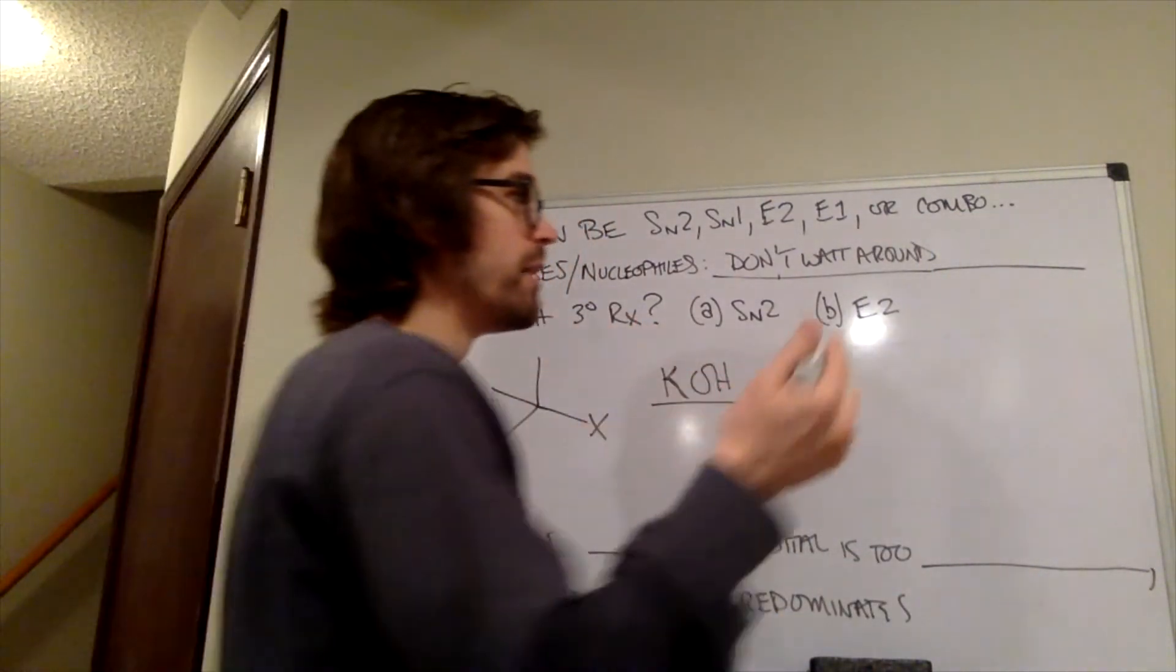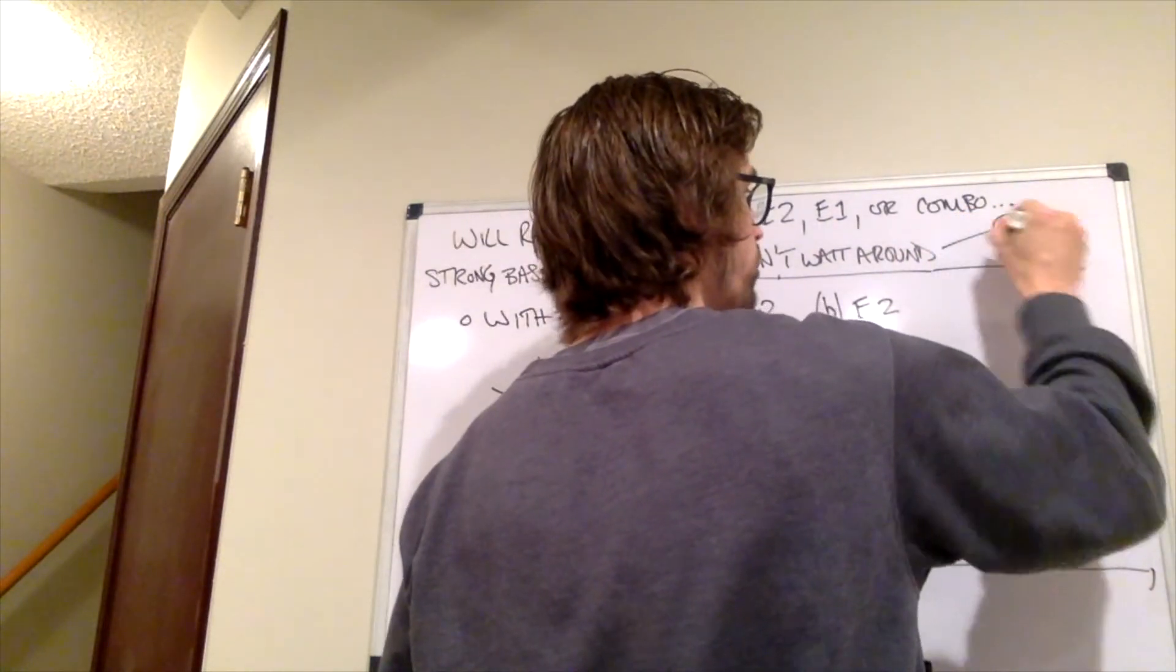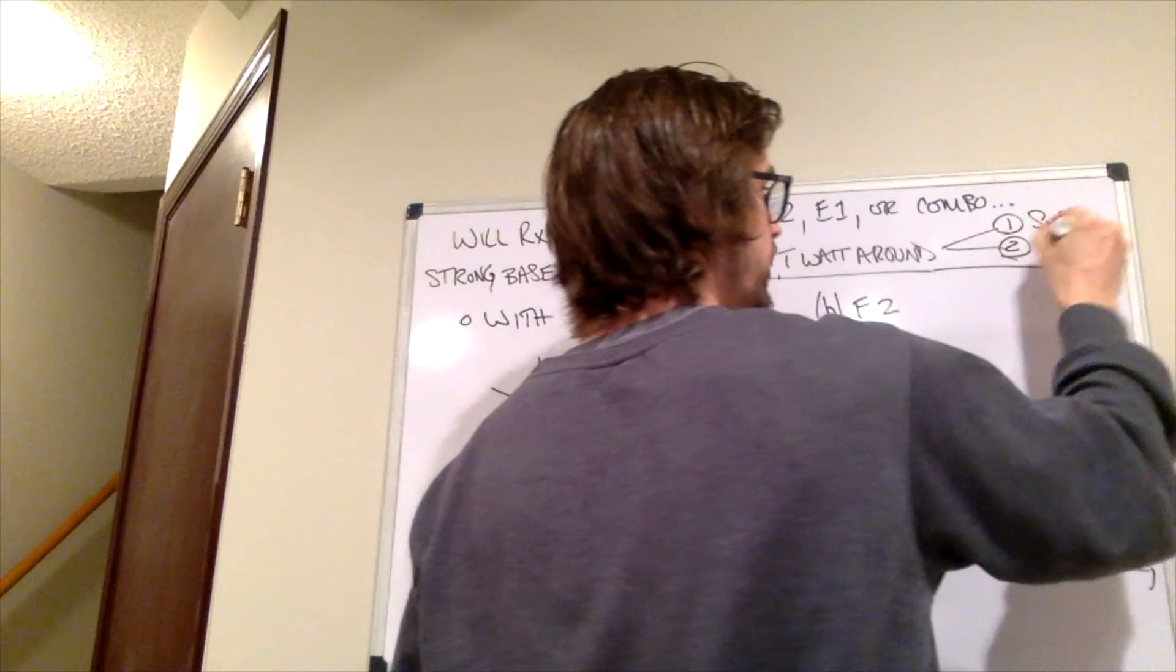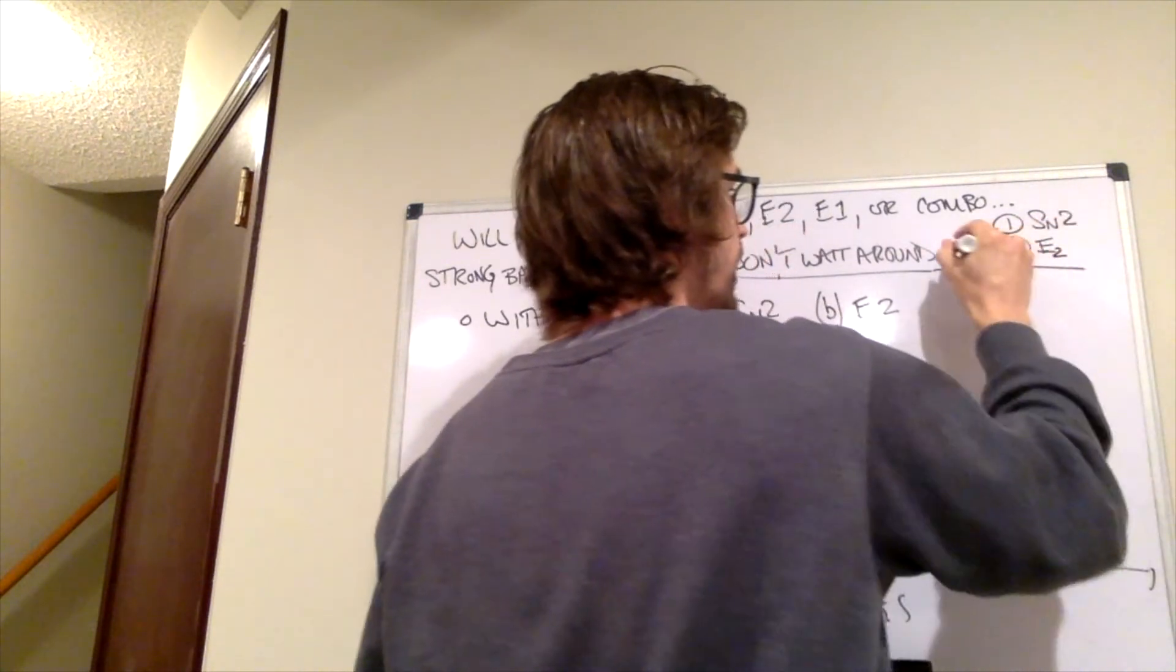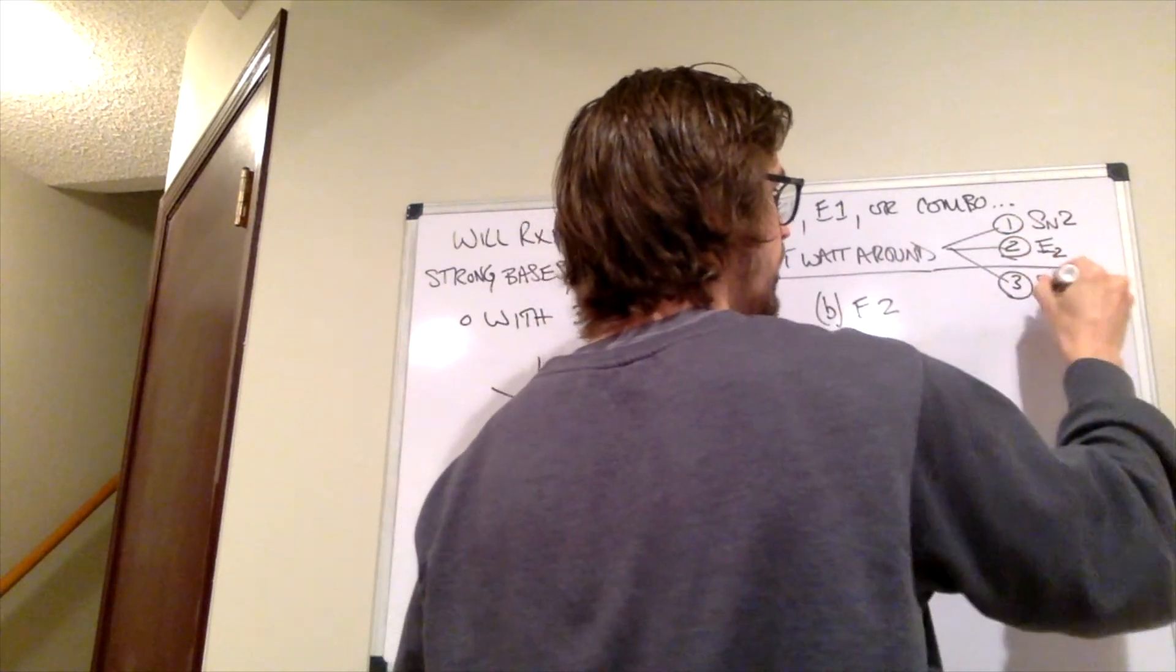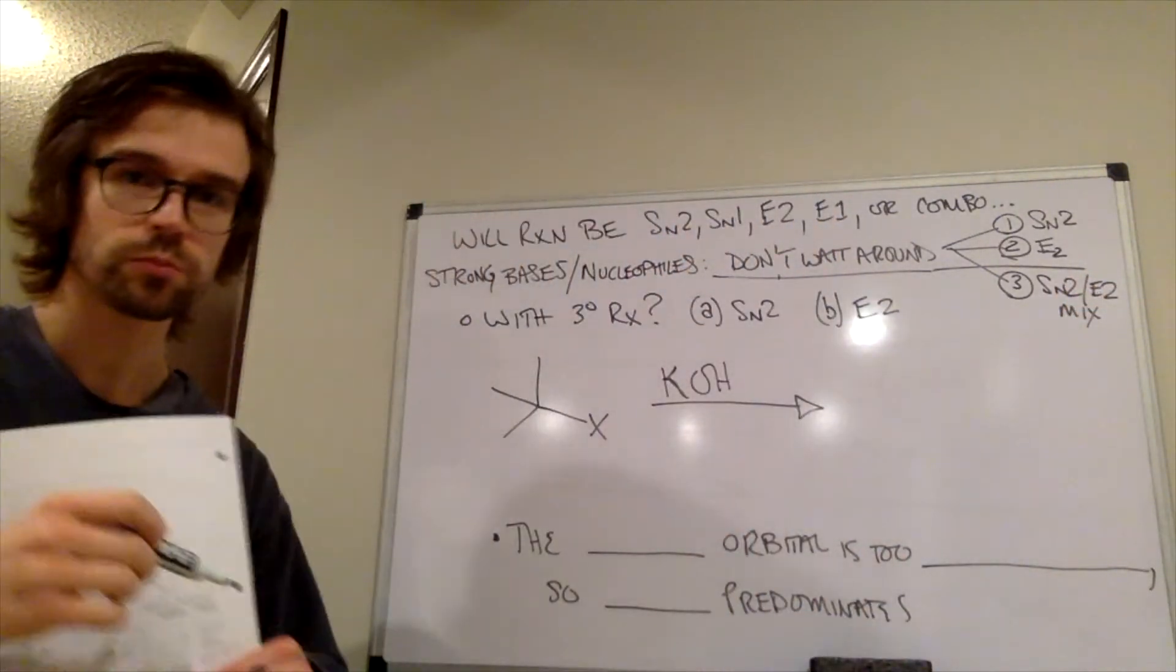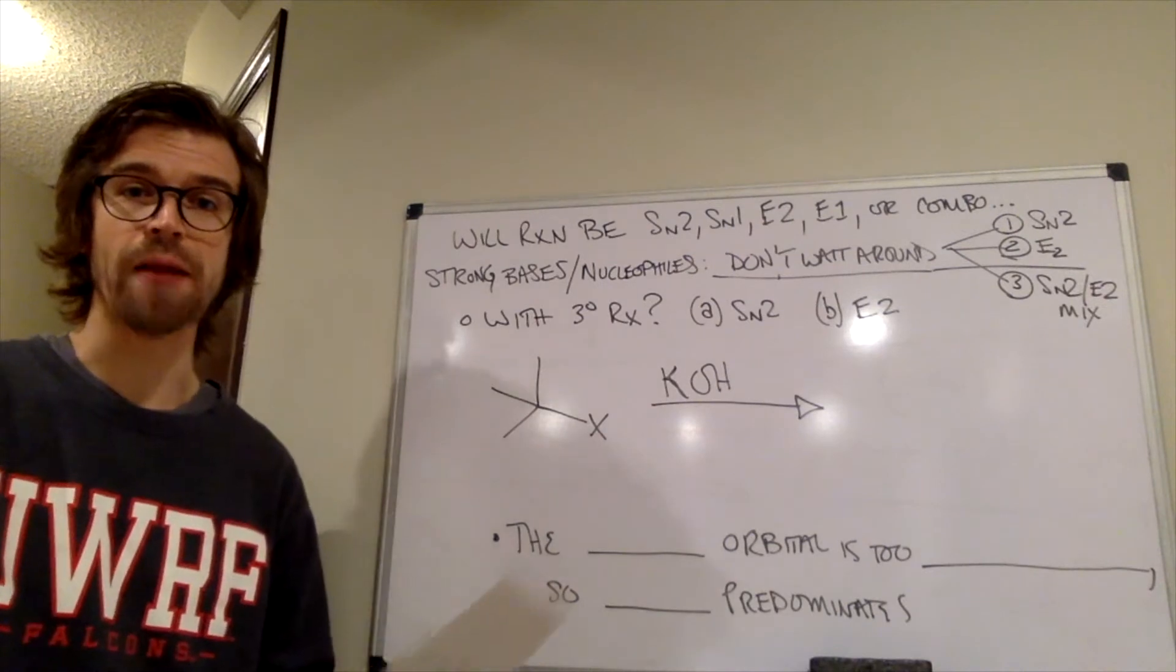So with that, we have kind of three options. Option one would be just SN2, option two would be just E2, and option three would be an SN2-E2 mix. So, those are the options, that's what could happen.